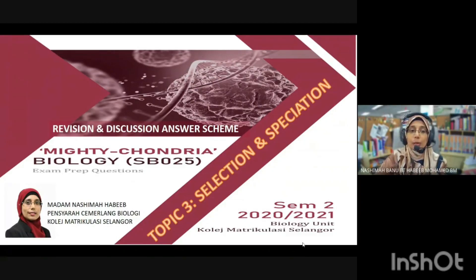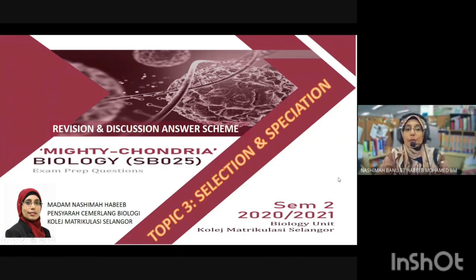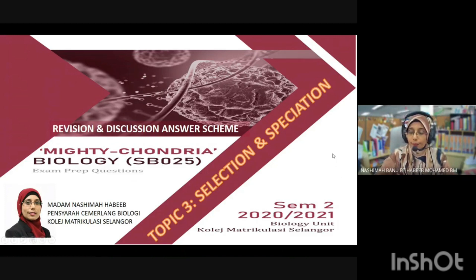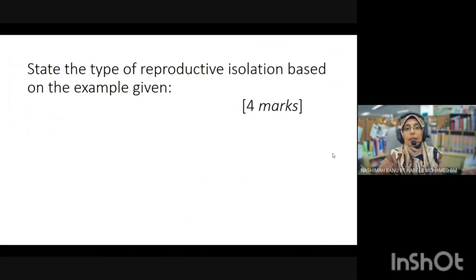Assalamualaikum and good day to everyone. We are going to discuss Topic 3, which is selection and speciation, for the module on mitochondria. Let's have a look at the first question: state the types of reproductive isolation based on the example given.